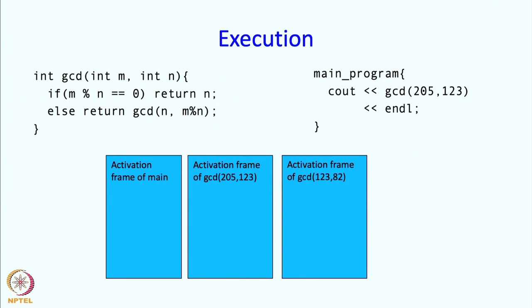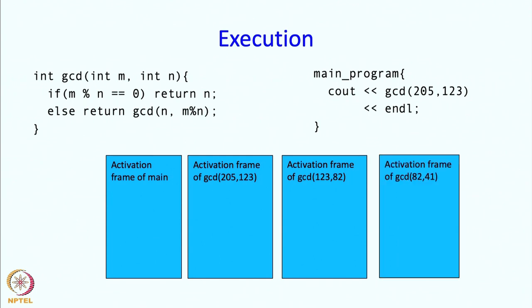The second call starts executing with M=123 and N=82. Again M mod N is not equal to 0, so the else statement executes. We return the GCD of N=82 and M mod N = 123 mod 82 = 41. So we require GCD(82, 41) to be returned. This call suspends and a new activation frame is created. Now we have an activation frame for GCD called with arguments 82 and 41.